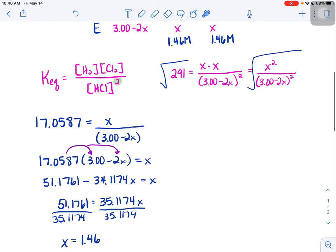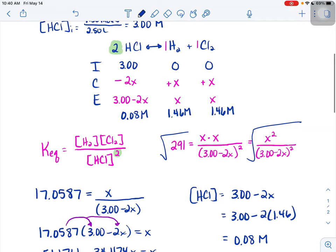Now our equilibrium for hydrochloric acid was 3 minus 2x. So I'm going to do a little work for that hydrochloric acid down here. If it was 3 minus 2x and our x was 1.46, throw that guy in our calculator and we'd get 0.08 molar. So our equilibrium molarities for the decomposition of hydrochloric acid under these conditions are right there.